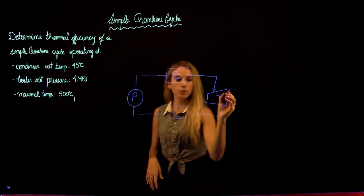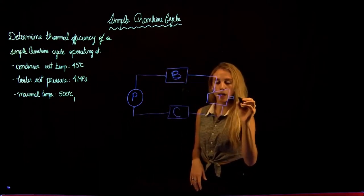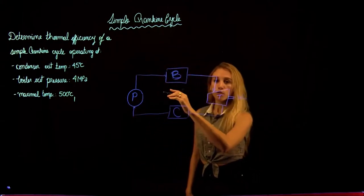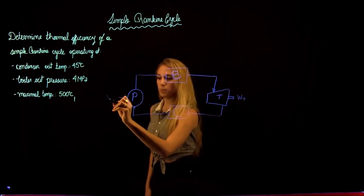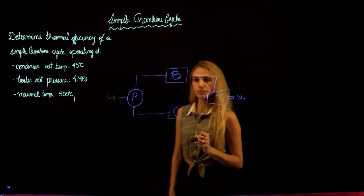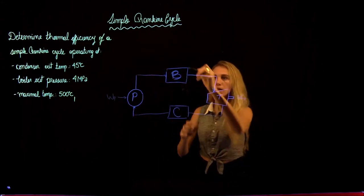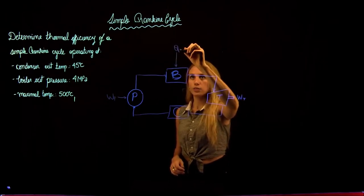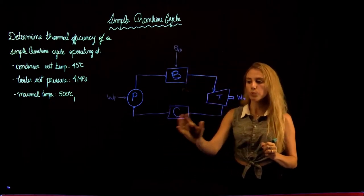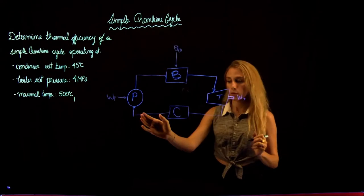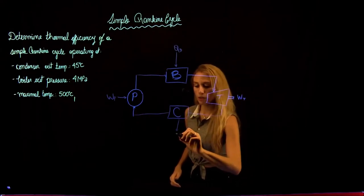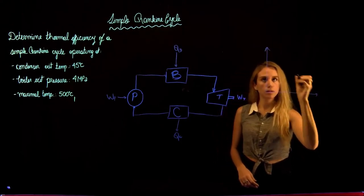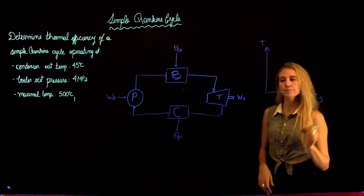The turbine creates work output, which we call WT. In the pump, work input is needed to move the fluid from low to high pressure — we call that WP. In the boiler, we're heating up the fluid, so we have heat in, which we call QB. In the condenser, we're removing heat to convert vapor to liquid, so we have heat out, which we call QC.